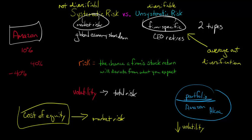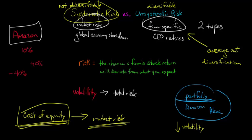A global economic slowdown hurts everybody. Because we can't diversify away systematic risk, when we think about the cost of equity and the risk premium associated with a particular firm's stock, what we really need to think about is the level of market risk or systematic risk associated with Amazon, because that's what's going to drive the cost of equity for that firm. We'll talk about how to measure the amount of systematic risk for a firm like Amazon — that's going to be called beta, which you might have heard of — and we'll discuss beta and the capital asset pricing model for estimating cost of equity in a future video.